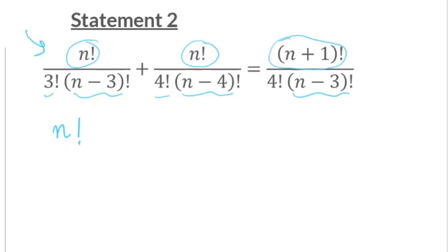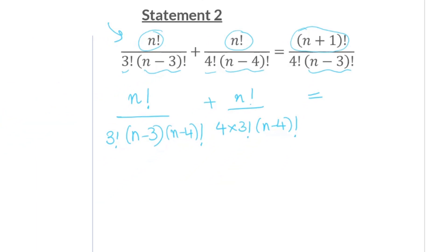So N factorial. You have 3 factorial. So you'll keep it as is. N minus 3 factorial. You're going to write as 3 factorial into N minus 4 factorial. Plus N factorial. 4 factorial. You're going to write as 4 times 3 factorial into N minus 4 factorial. I'm going to work on the left hand side first, and then we're going to start the right hand side. So now you start taking things out. N factorial divided by 3 factorial, and you can get this term out as well, N minus 4 factorial.